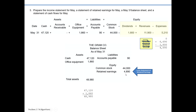If anyone wants more detail, they can go back to our statement of retained earnings and then to our income statement. We want to total up our liabilities and equity to prove out our accounting equation is in balance: accounts payable of $90, common stock of $44,000, plus retained earnings of $4,890, equals total liabilities and equity of $48,980 — which proves our accounting equation is in balance. Our next video is going to cover our last financial statement, the statement of cash flows.